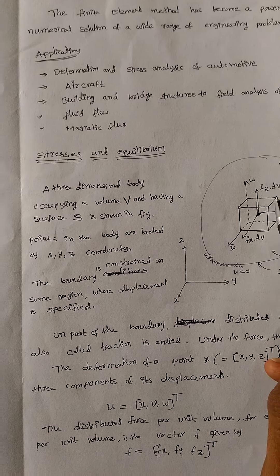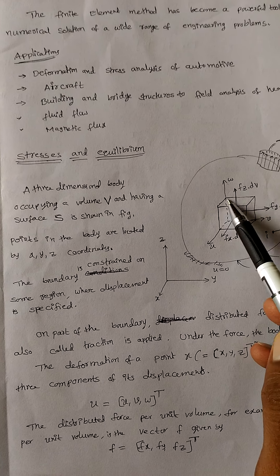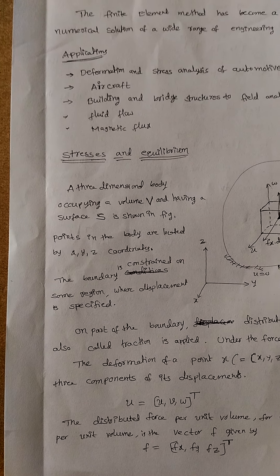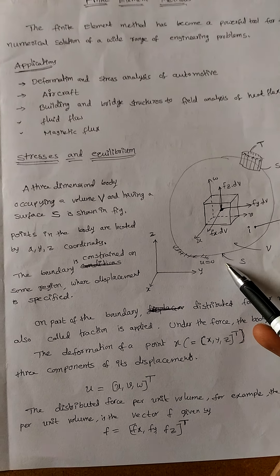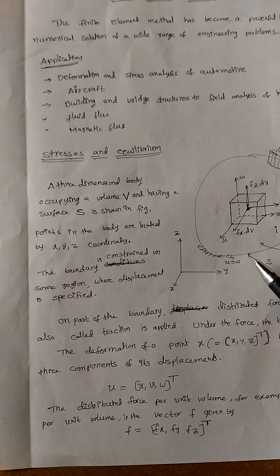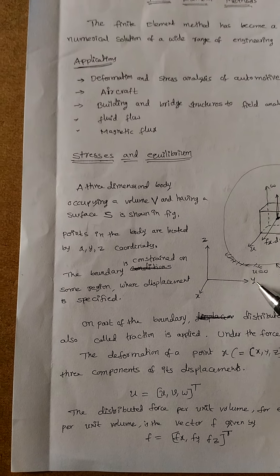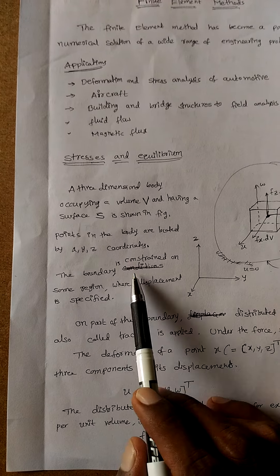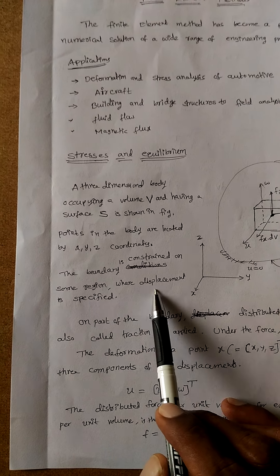Equilibrium: A three-dimensional body occupying volume V and having a surface. Points in the body are located by x, y, and z coordinates. The boundary constraint is on some region where displacement is specified.